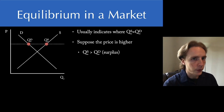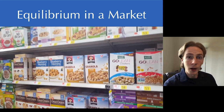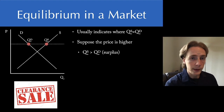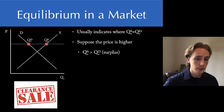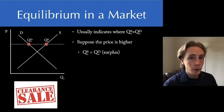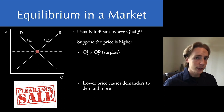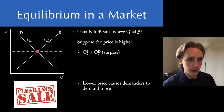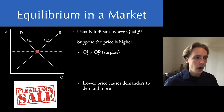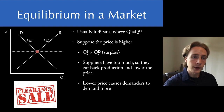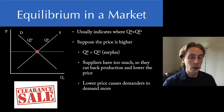Imagine that you are the manager at the grocery store and you notice that cereal is piling up on the shelves. How do you react? It makes sense for you to mark that cereal down, to put it on sale — to lower the price. When you cut that price, people who weren't willing to buy at the higher price are going to be more willing to purchase at the lower price, so quantity demanded increases. But you also react as a supplier — you say you bought too much from the wholesaler and you're going to purchase less next time, so quantity supplied also falls.